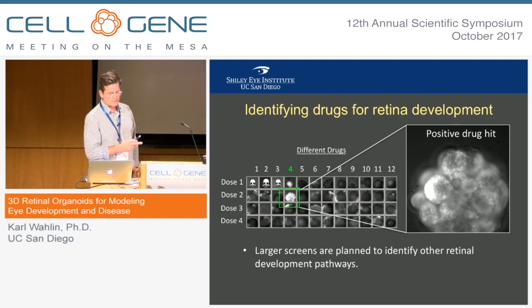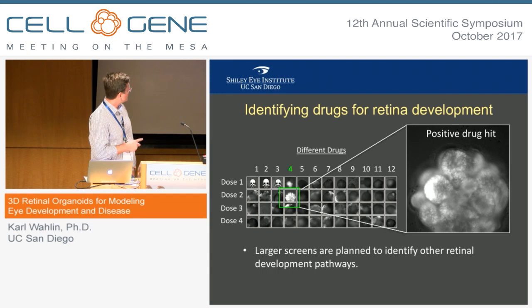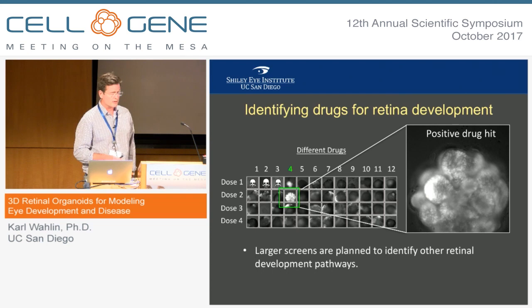In terms of how the general screens work, here is an example of a small pilot experiment where we tested about 400 compounds. We did a dose response for each compound. At the highest range we often saw toxicity; at the lowest doses, we didn't see any responses; and somewhere in the middle, we would often get some hits. In this particular case, we saw a significant enhancement of SIX6-GFP expression — a target we're going to pursue in the future.